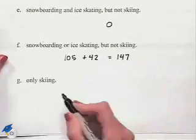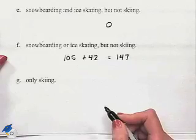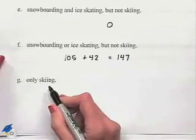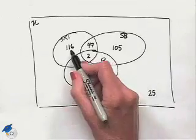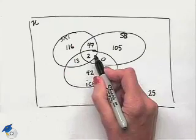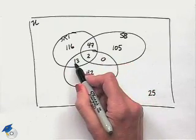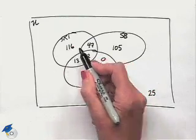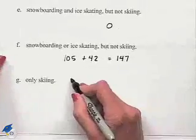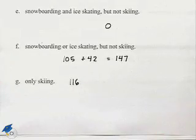Our last question: how many surveyed stated that they enjoyed only skiing? That would be the section inside the skiing circle that does not include any overlap with the other sets, so the answer is 116.